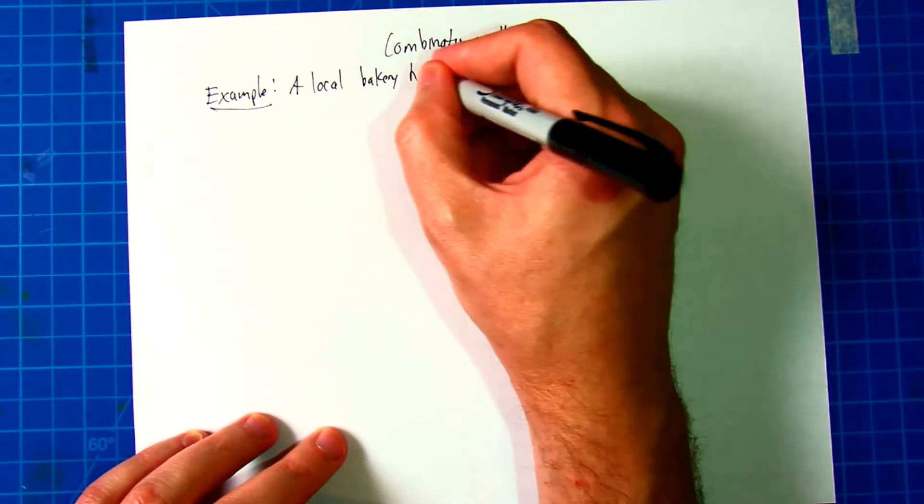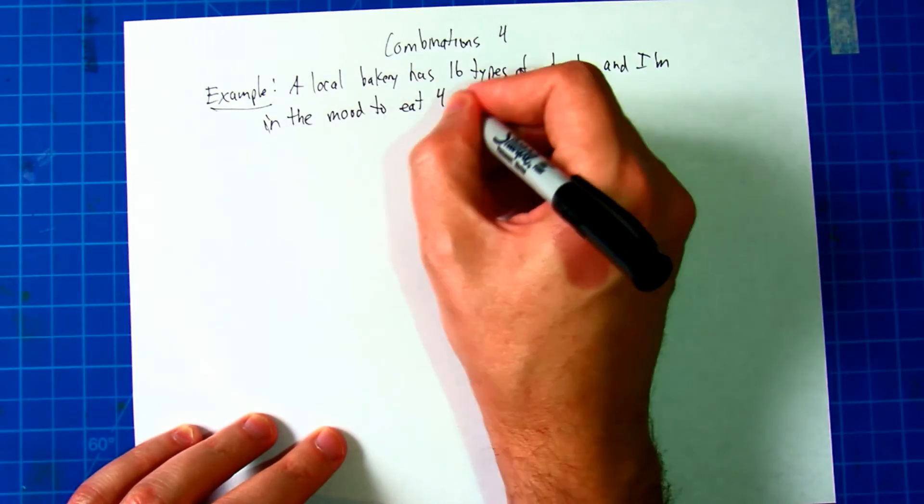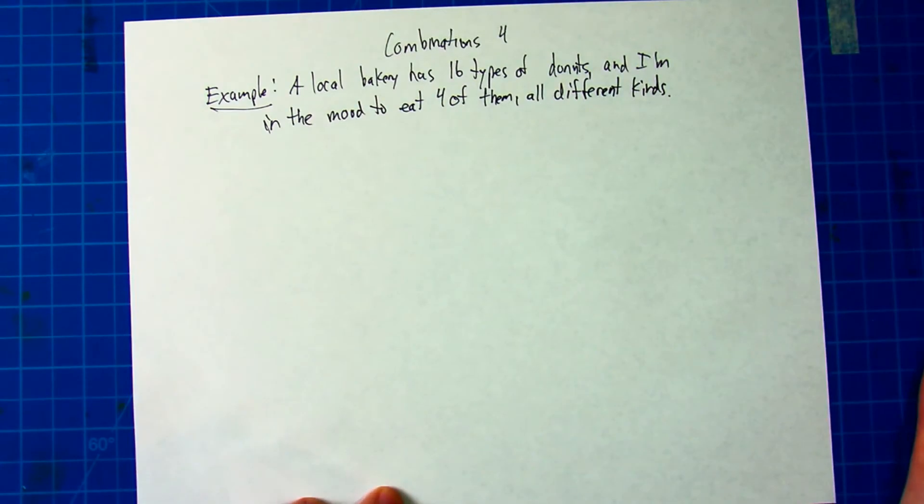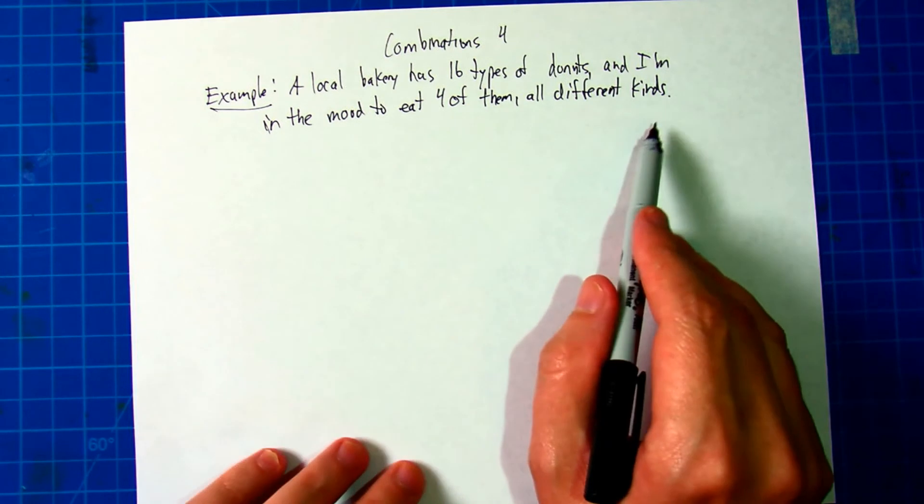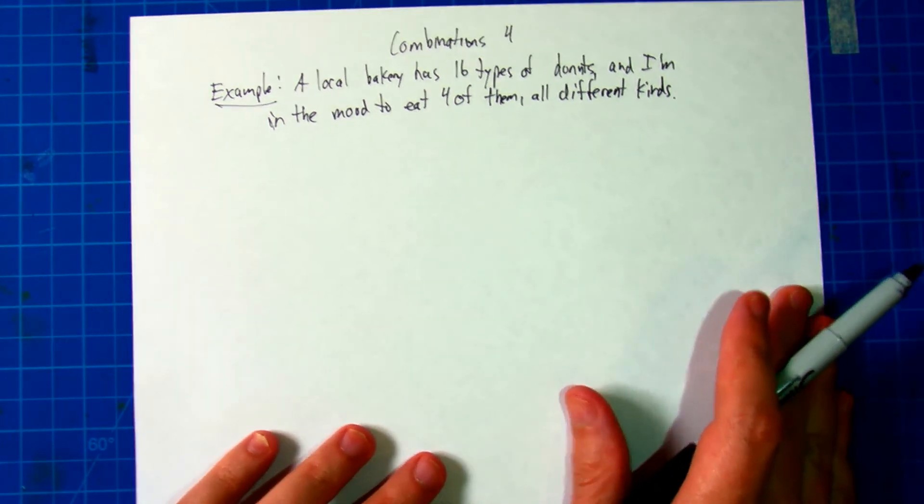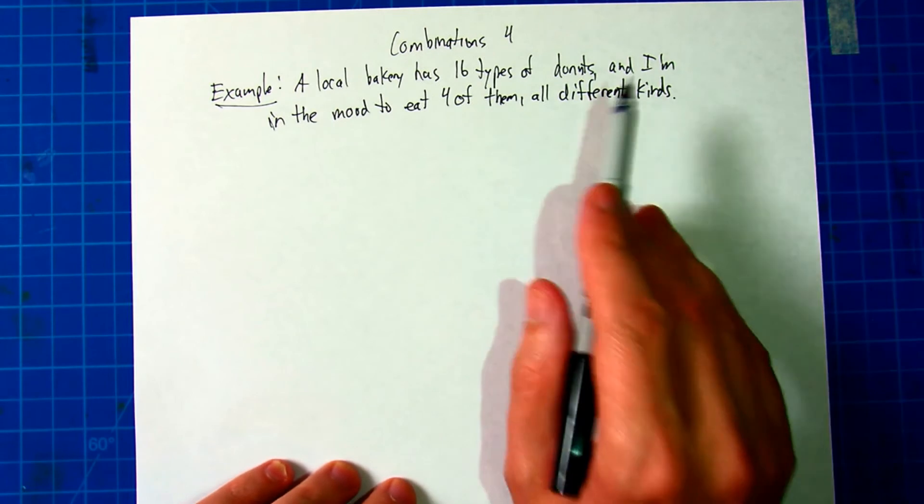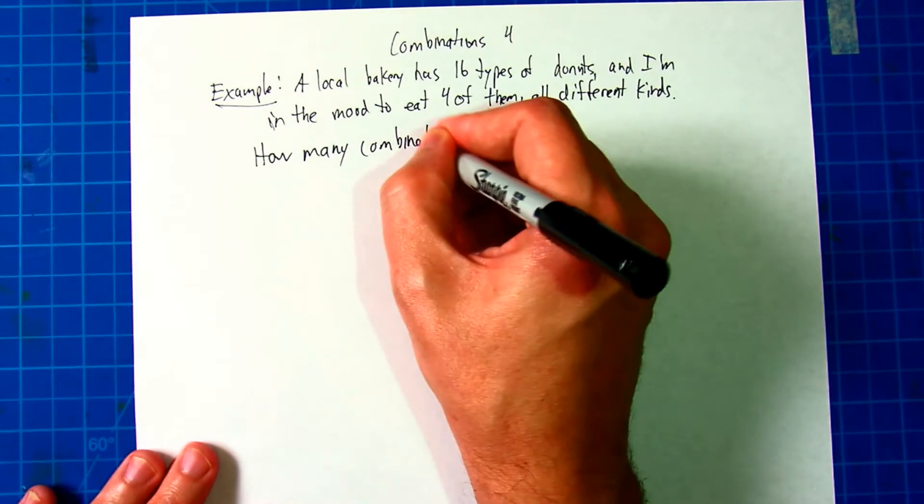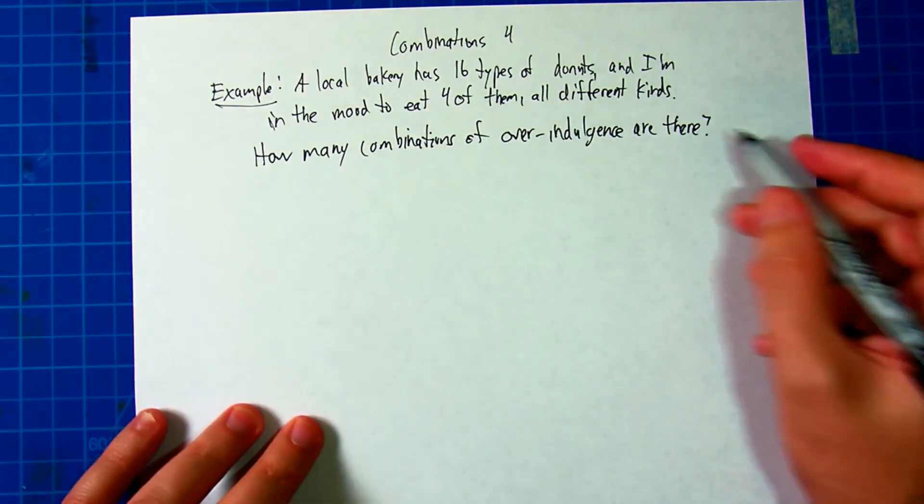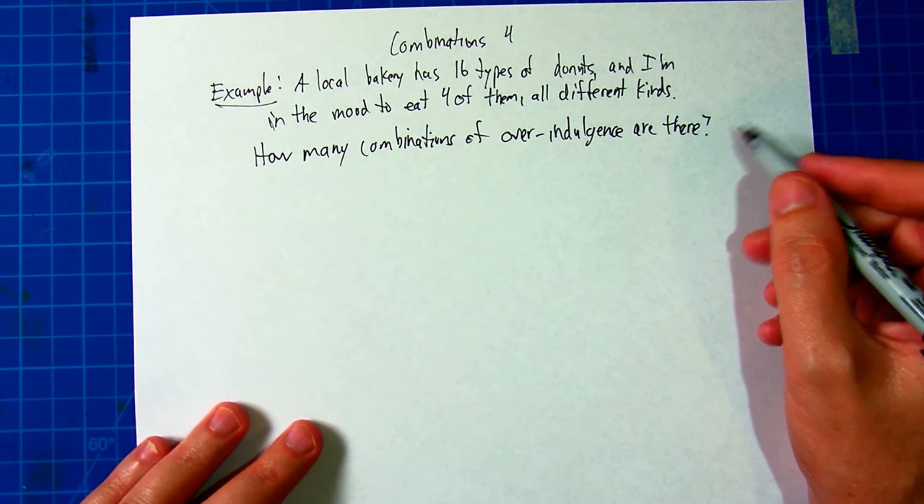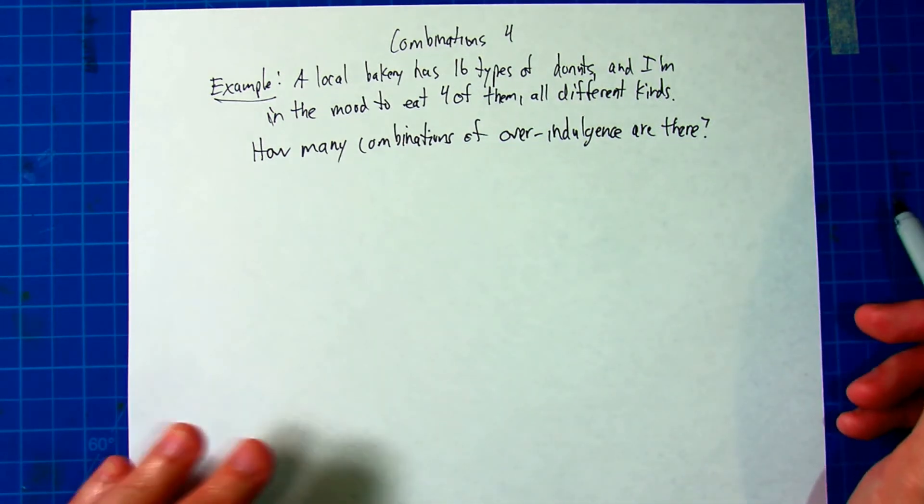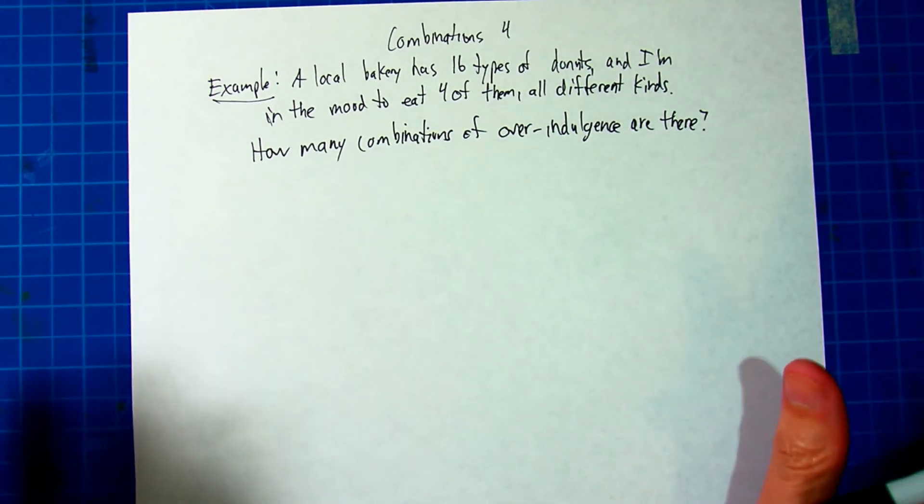For example, a local bakery has 16 types of donuts, and I'm in the mood to eat four of them, all different kinds. I'm not going to repeat the same kind of donut, because I don't want to eat two Boston creams when I could eat a Boston cream and then a jelly donut or whatever, and there would be all different kinds, so no repeats. How many combinations of overindulgence in total are there?